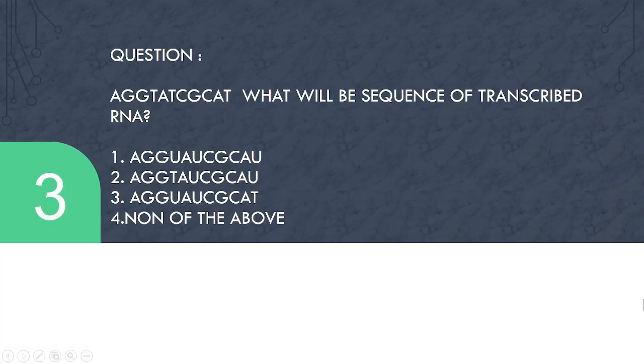Next question, we have given a sequence and this is the DNA sequence. If you convert it into RNA, what would it be? If you look at the first answer, all Ts are converted into U. Second answer, some of the Ts are converted into U. Third answer is the same Ts. The answer is all Ts are converted into U.